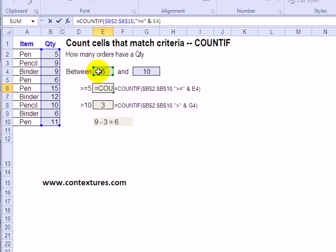And then checking that against our minimum number which is 5. And there are 9 orders which have a quantity greater than or equal to 5.